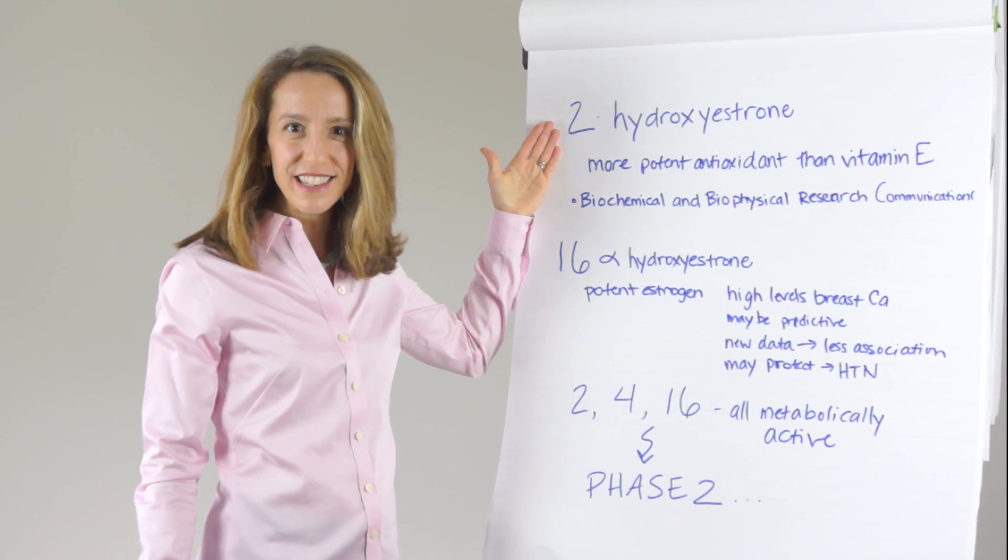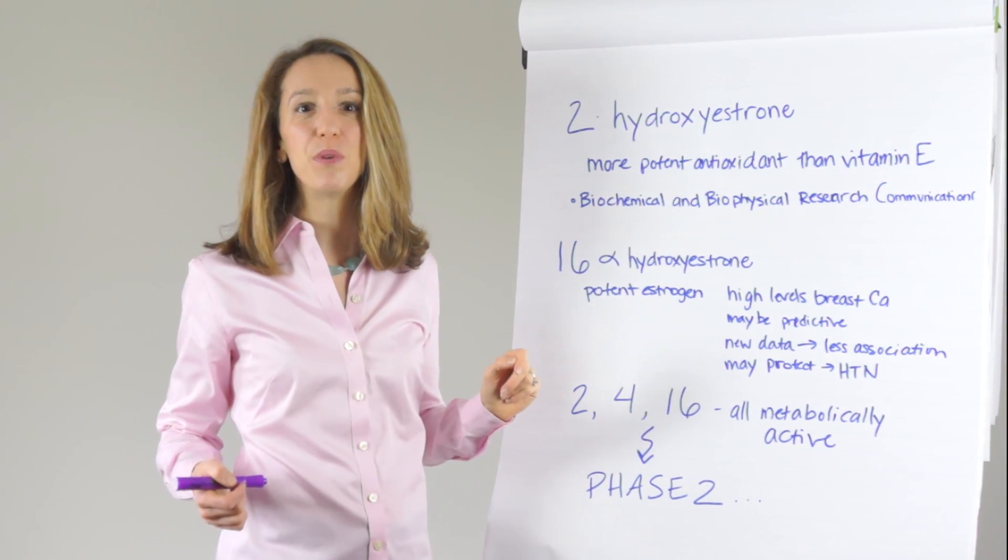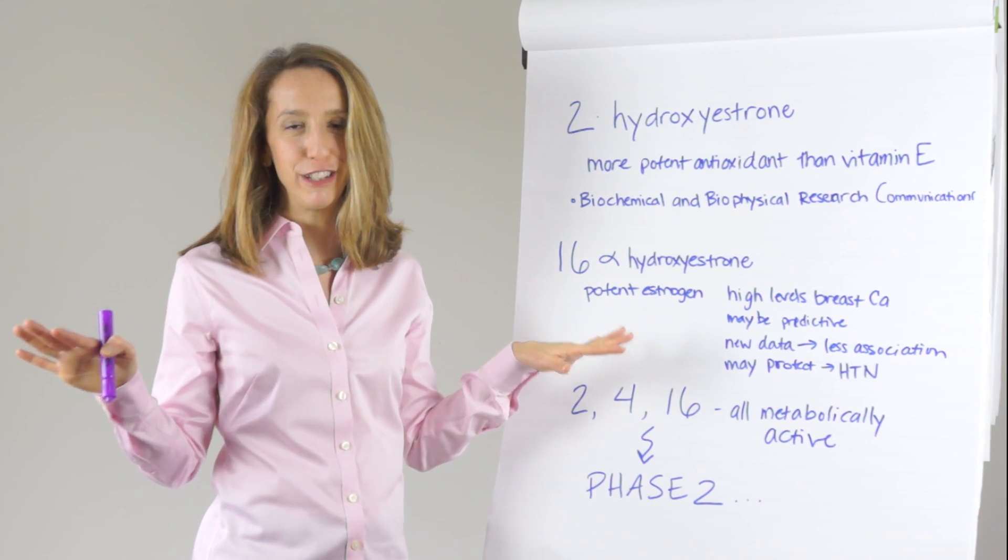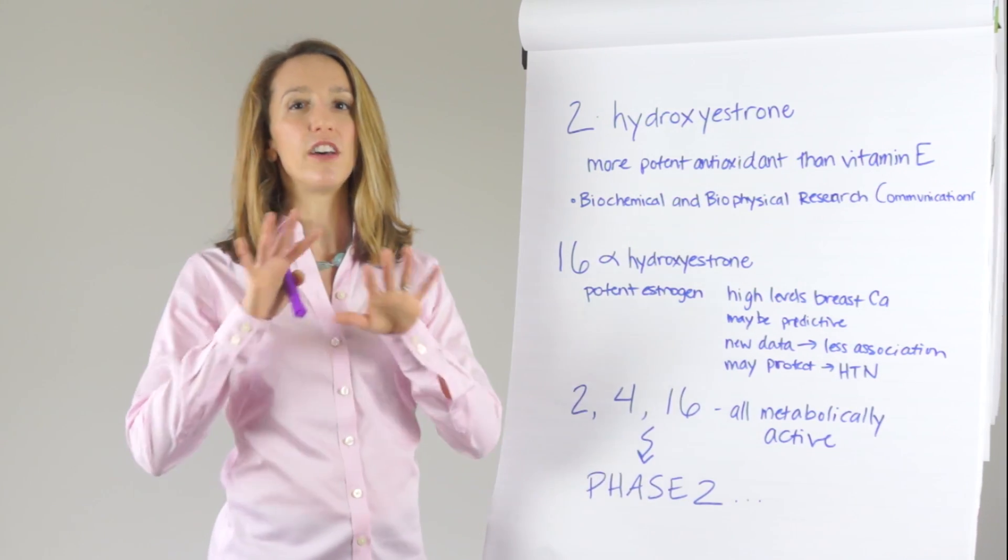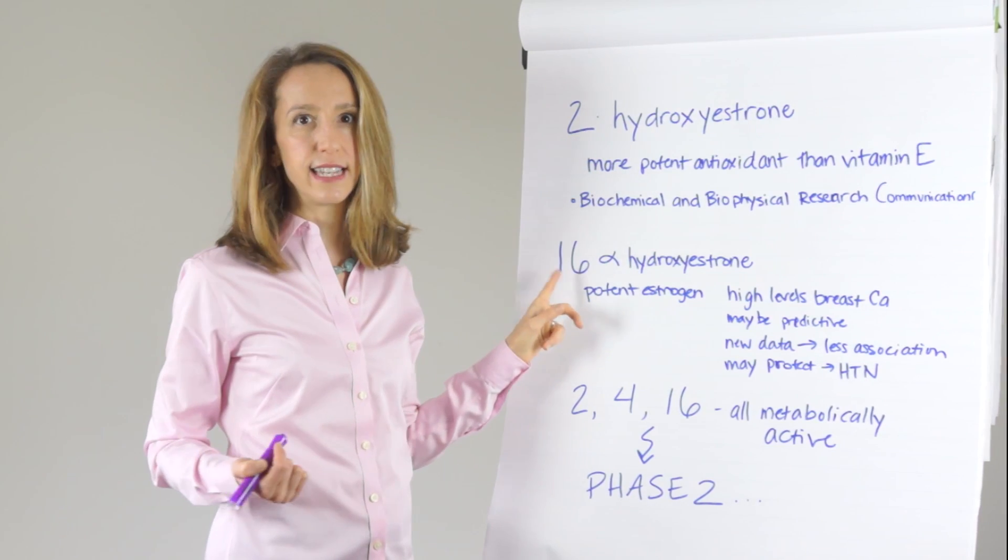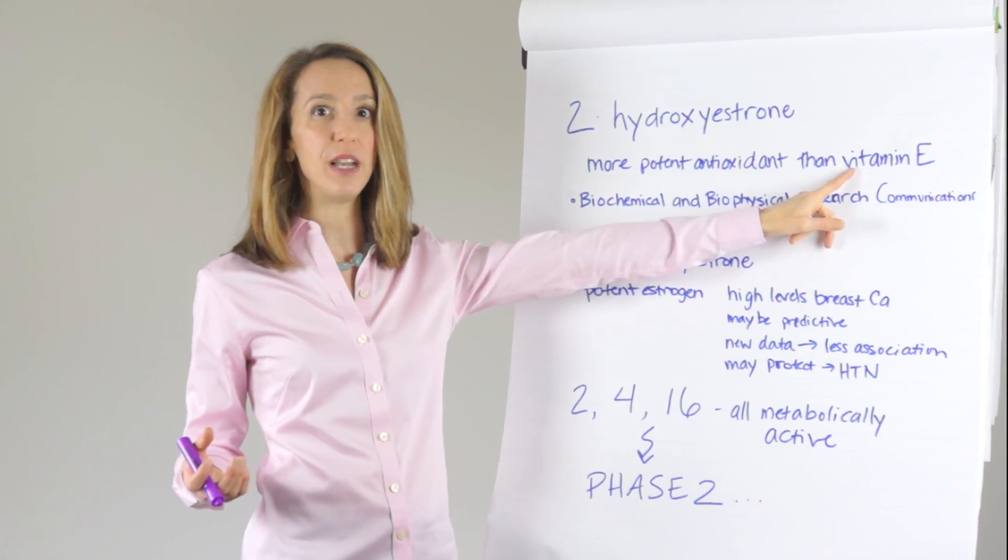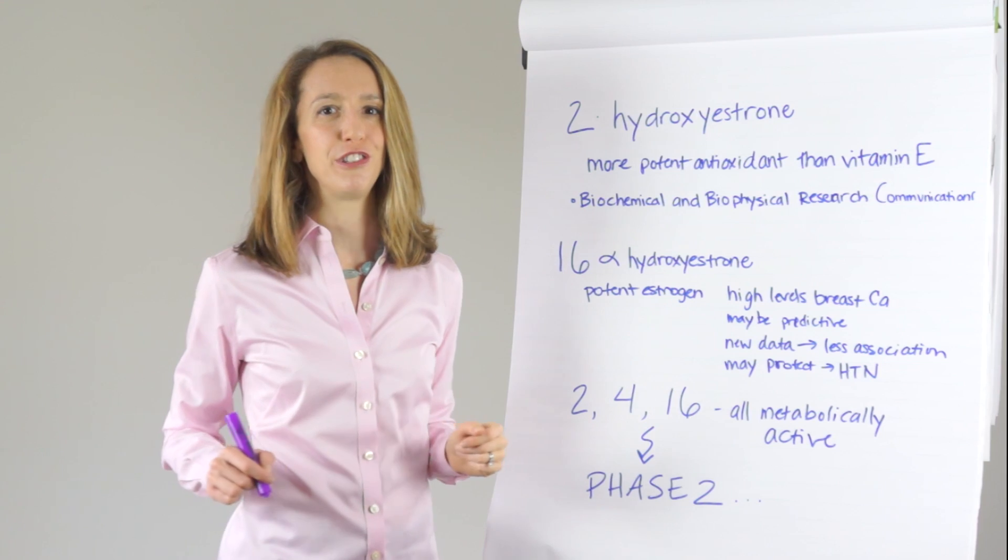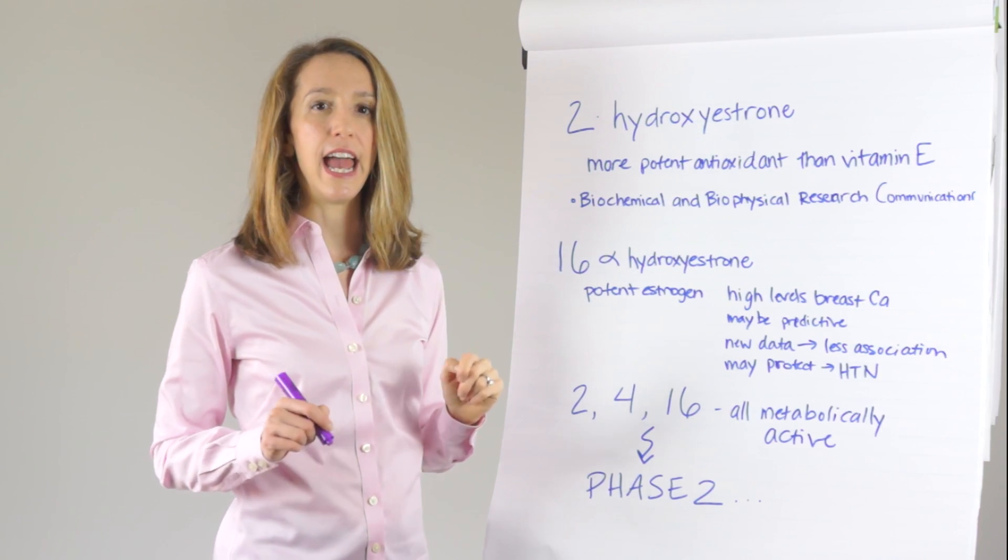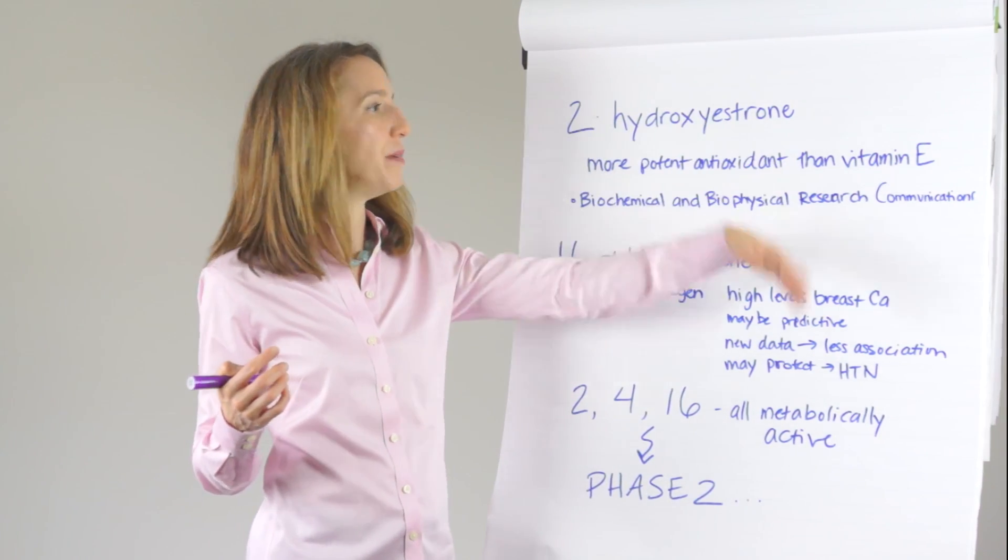So let's talk about these metabolites. Here's 2-hydroxy estrone, known as the good estrogen metabolite. That's the one we want more of. 16-alpha-hydroxy estrone, bad. That is related to cancer. And 4 is also bad, not as clear, but not good. So we want a higher ratio of 2 to 16. And because 2 is a great metabolite, it's actually an antioxidant even more potent than vitamin E. This is a great antioxidant. And that's important because in liver phase 1 detox, free radicals are produced which are bad for liver cells, and this can come in and quench those.